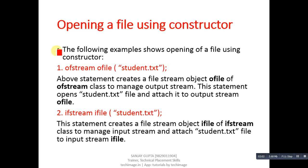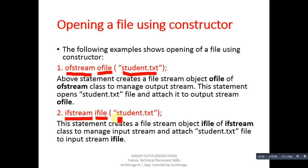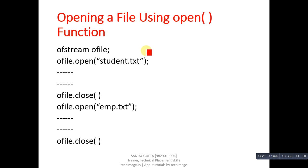Here is an example of opening a file using the constructor. ofstream is the class name, ofile is its object, and we link it to student.txt to store information generated by the program. Similarly, ifstream creates object ifile linked to student.txt to read information from that file. Both use the constructor to open the file.